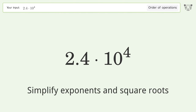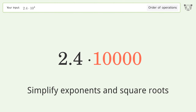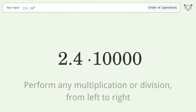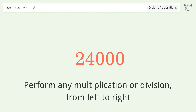First, simplify exponents and square roots: 10 to the power of 4 equals 10,000. Then perform any multiplication or division from left to right: 2.4 times 10,000 equals 24,000.